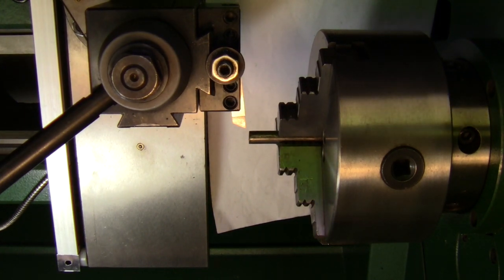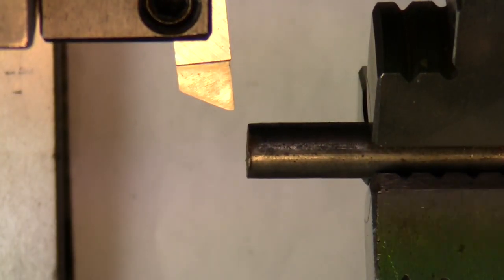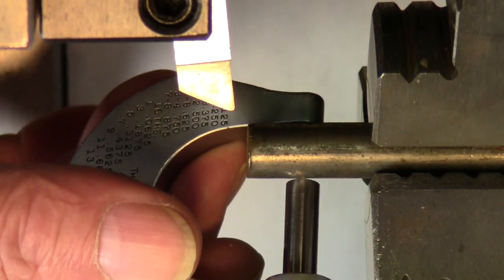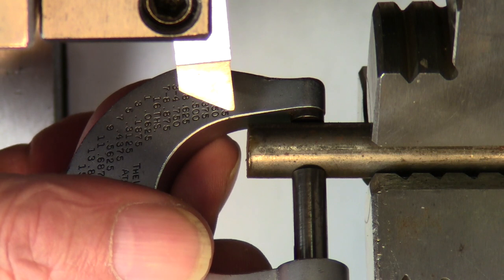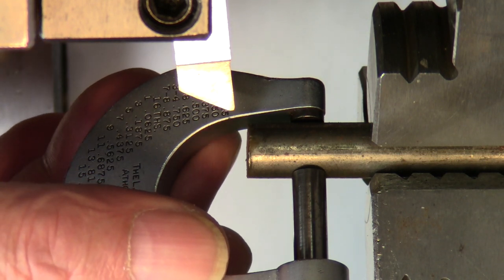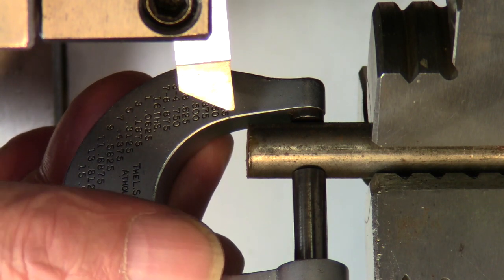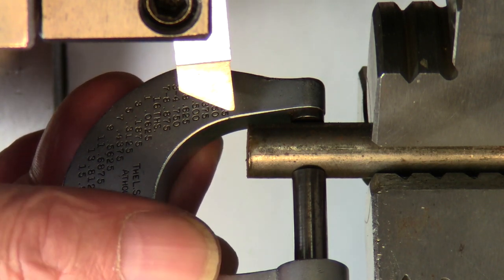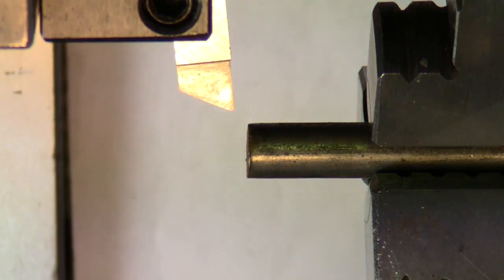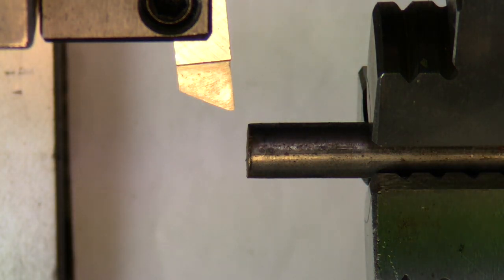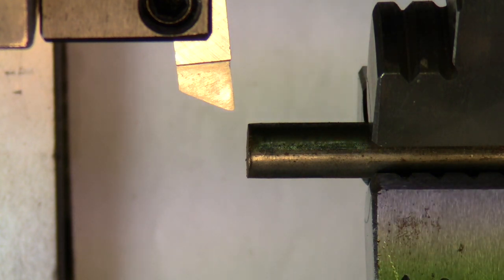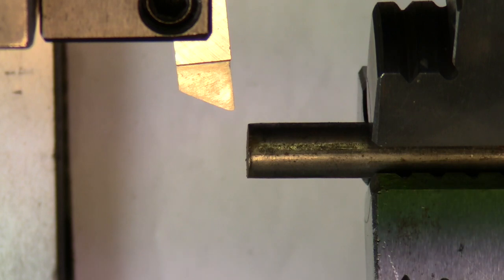I'm going to go ahead and make one of these and face it off and turn it. I'm using a piece of mild steel that's 388 in diameter, so I need to turn this down to 344 is what I'd like. That should give me a thousandth under the inside of the barrel. Let me face it off and turn.